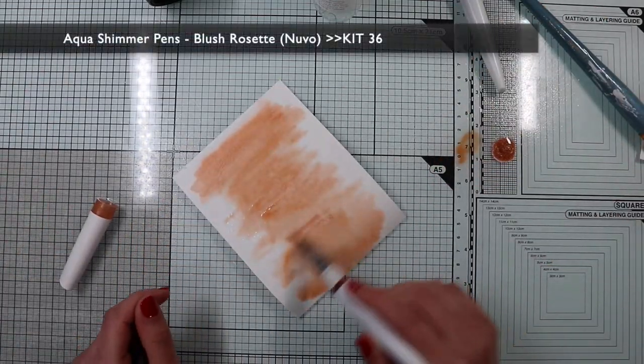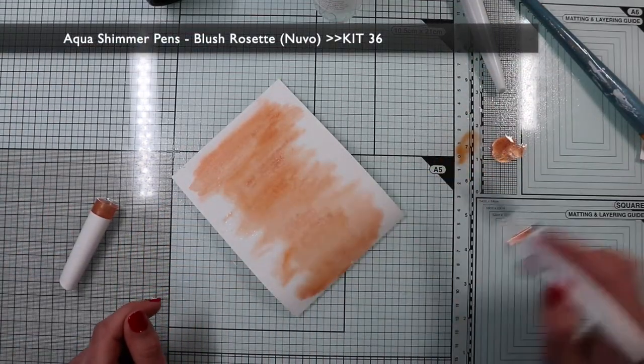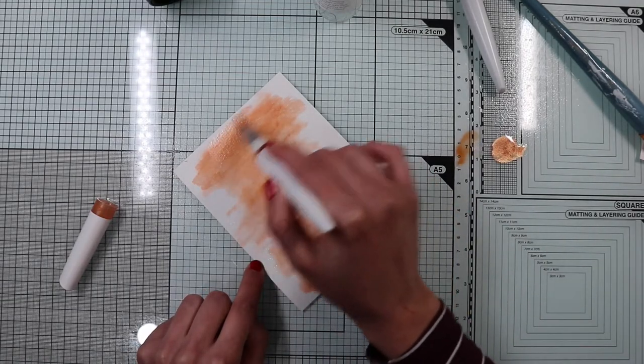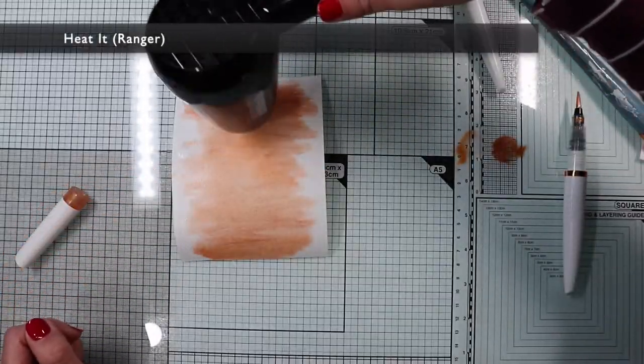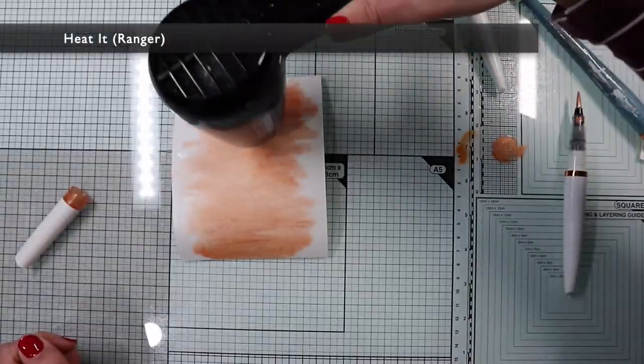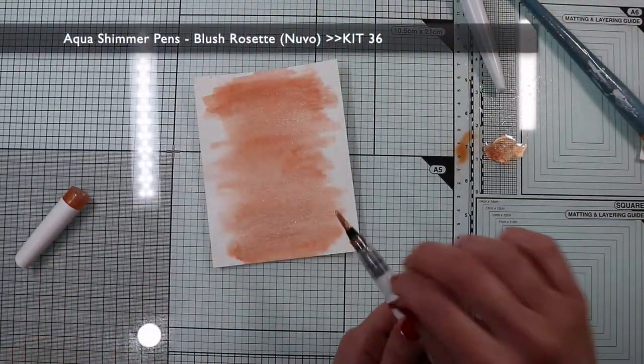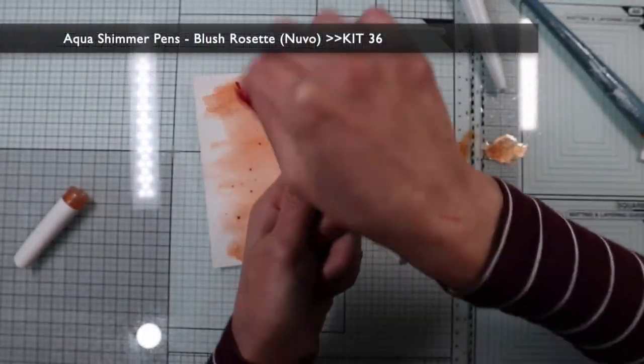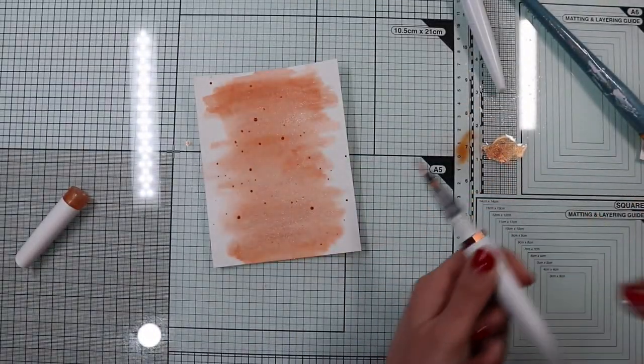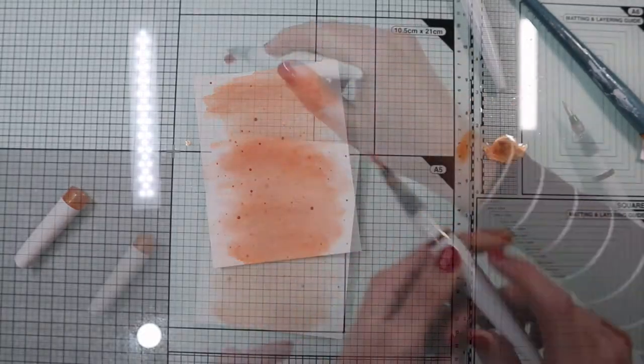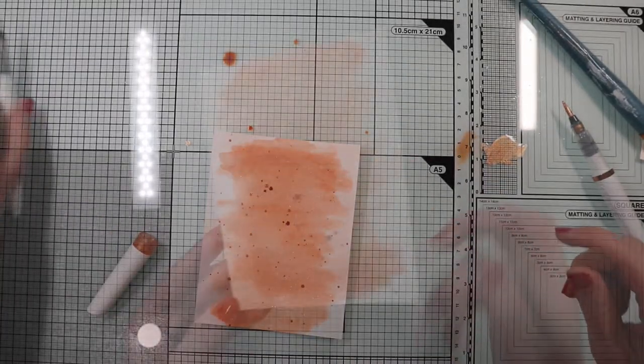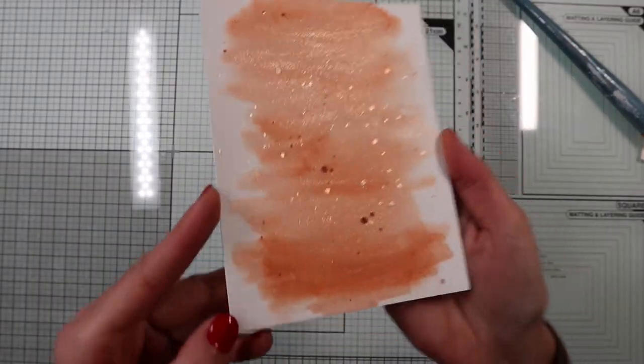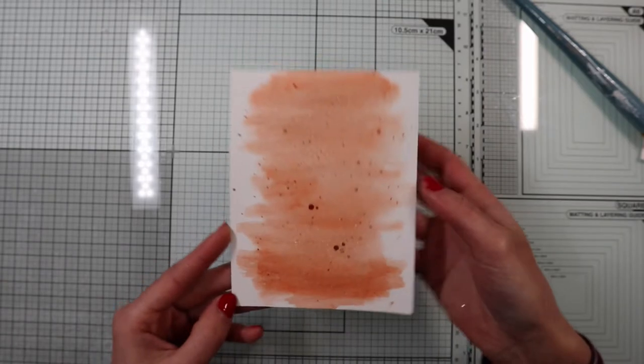Next, I'm going to apply the last layer with the shimmer pen included in the kit. I'm going to dry and add some splashes here and there. This technique is my favorite when I create my own background. And here is a super sparkling watercolor effect background.